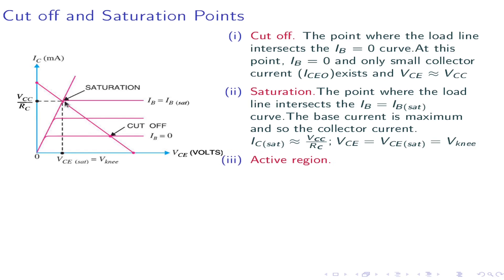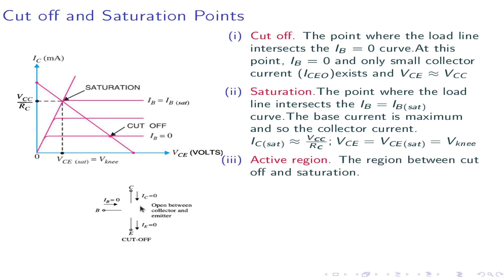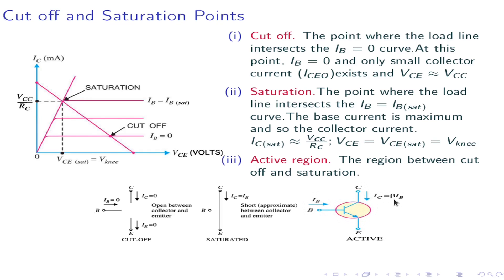In the cutoff region, the transistor acts as an open switch — there is no base current, collector current, or emitter current. In the saturation region, it acts like a short circuit between collector and emitter, like a closed switch. In this way, a transistor can be used as a switch. In the active region, the collector current is beta times Ib, meaning the input is amplified beta times — so in the active region, a transistor acts as an amplifier.